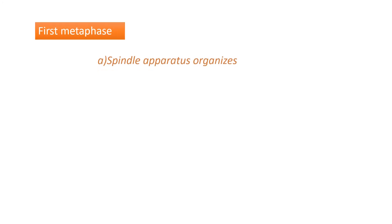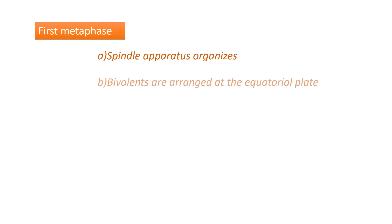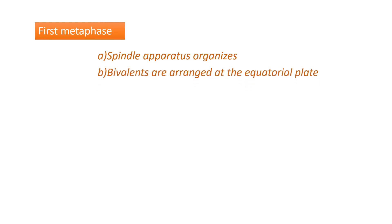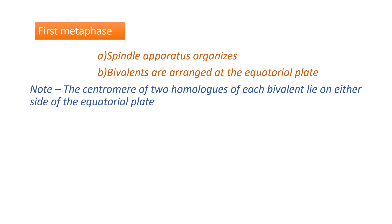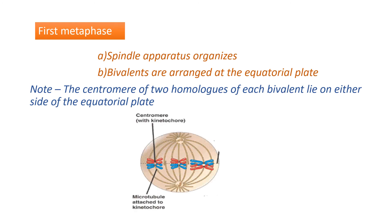The next stage of meiosis I is metaphase I. During this stage, the spindle apparatus organizes and the bivalents are arranged at the equatorial plate. The centromeres of these bivalents do not lie exactly on the equatorial plate — they lie on either side of it. If the equatorial plate is at the center, the two centromeres lie on either side, not directly on the plate.